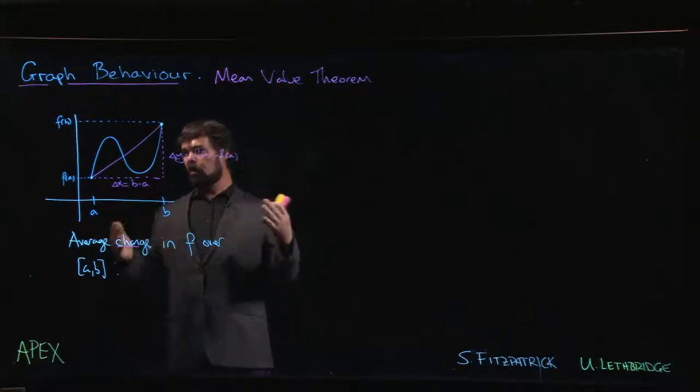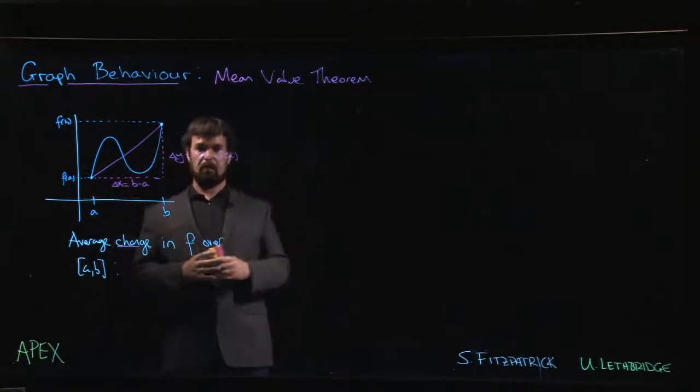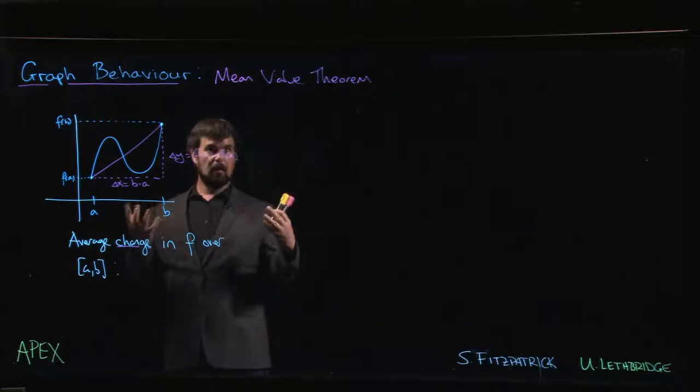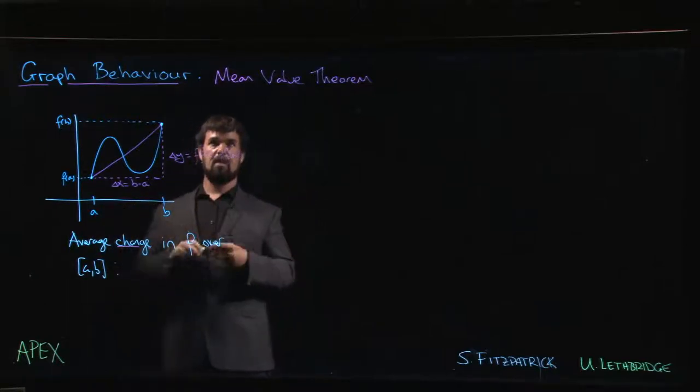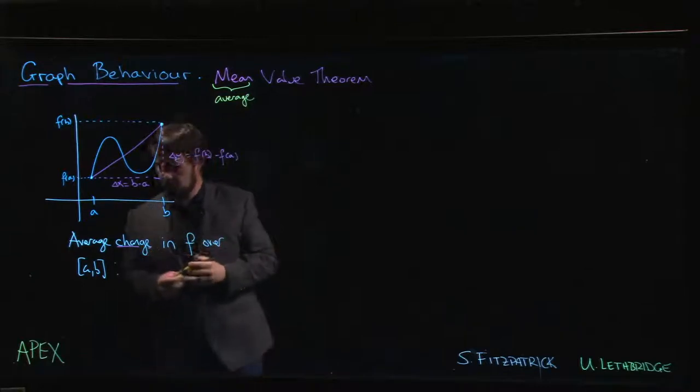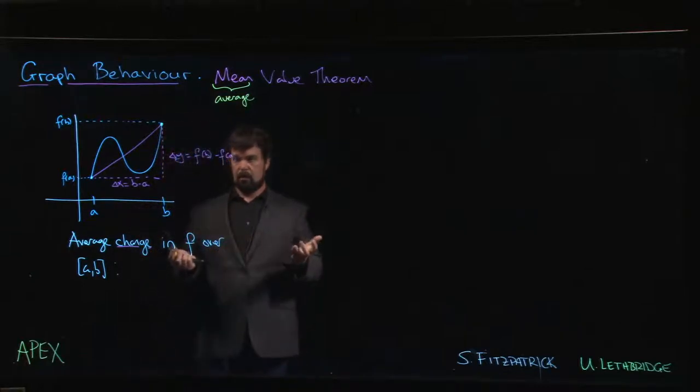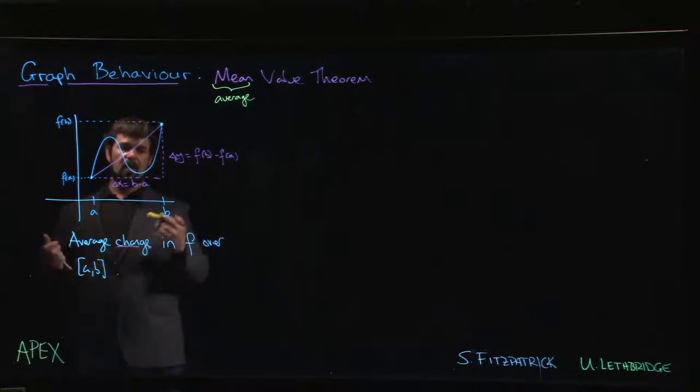Now the basic idea of the Mean Value Theorem is pretty simple. So far we've been concerned with extreme values—what is the absolute minimum, what's the absolute maximum. Now we're interested more in average values. When we say 'mean' here, we mean in the sense of average.